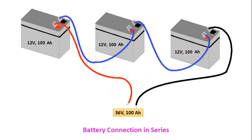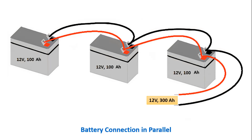To increase usage time while keeping the voltage the same, we can connect batteries in parallel. When connected in parallel, we can get 12 volts at 300 amp hours, thus increasing the usage time three times.